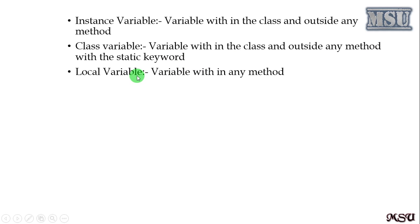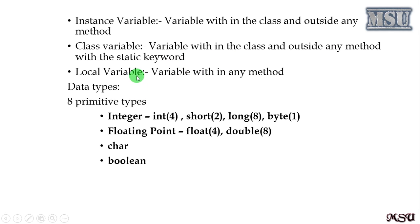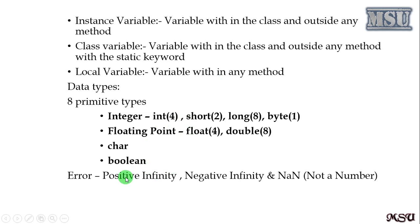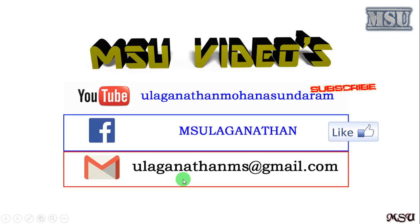There are different data types supported: int, short, long, byte, float, double, char, and boolean. Since these eight primitive data types are available, Java is called not purely object-oriented. There are also some error types common to every programming language. Thank you for visiting my channel — please subscribe and keep visiting. Thank you.